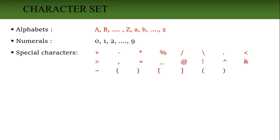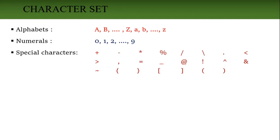So, in the character set, three things will come: alphabets, numbers, and special characters. Alphabets contain both uppercase and lowercase letters. Numbers contain all digits 0 to 9. Special characters contain everything other than alphabets and numbers. This is about character set.